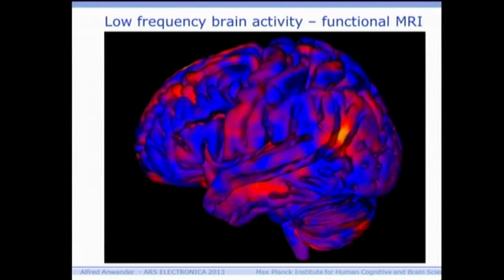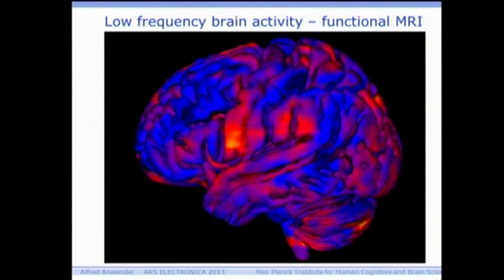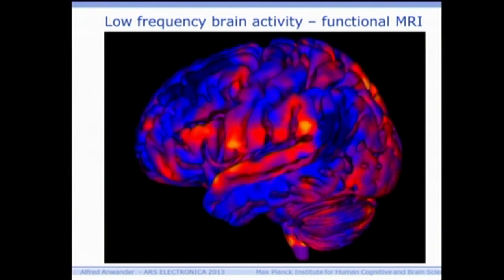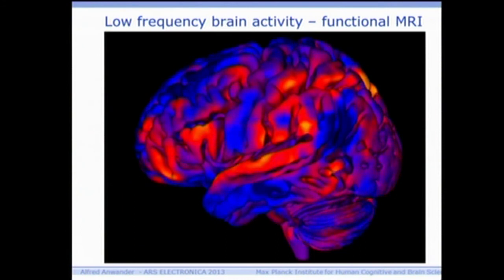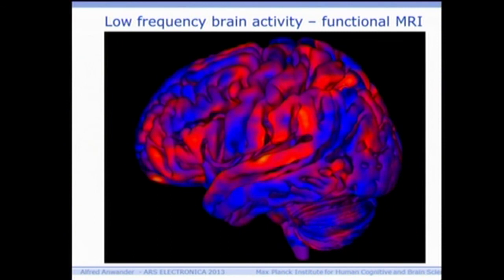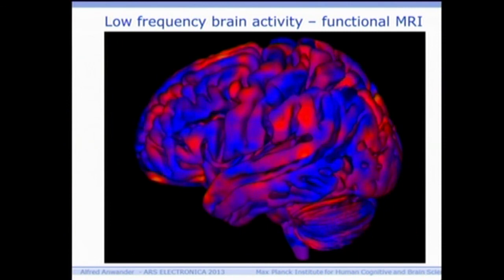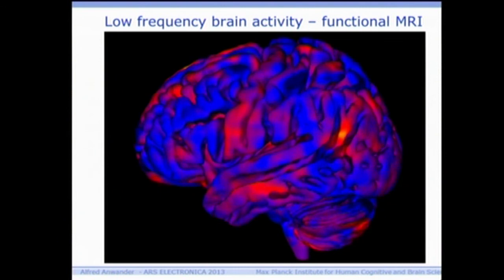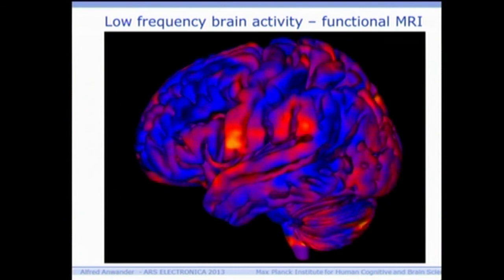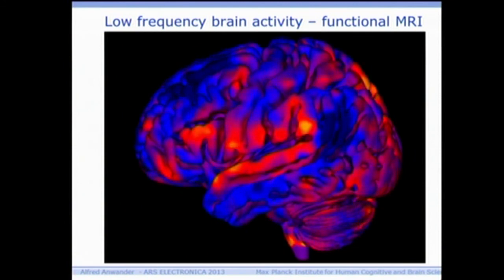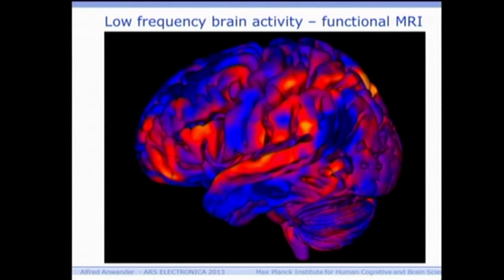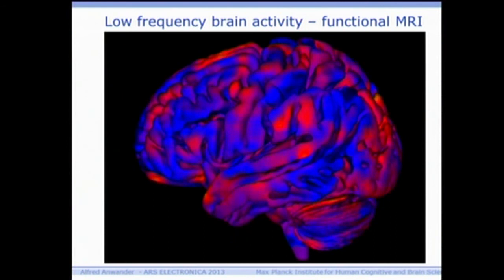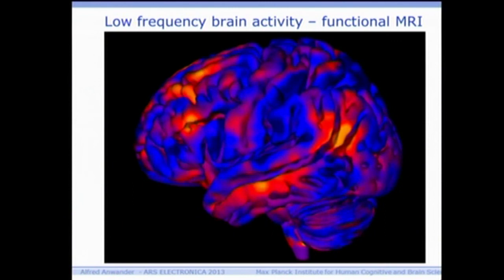When we look at functional activity — brain activity — as in this example, we can see that this is a dynamic image. The brain, even if no task is being performed, this is a brain at rest. And I can watch the slow changes going on in the brain. Some regions light up and become darker again. Bright colors stand for strong activity: a lot of blood flow, a lot of oxygen consumption, neuronal activity.